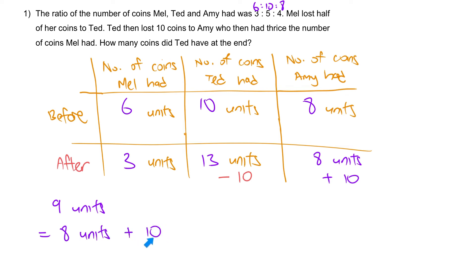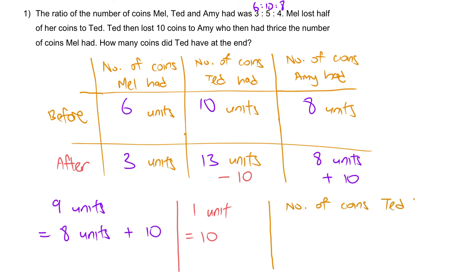So what can we say about this 10? This 10 must be equal to 1 unit. So 10 coins is equal to 1 unit. From here, we can figure out the answer. How many coins did Ted have at the end? Ted had 13 units, so 10 times 13 minus 10, which gives us the answer of 120.